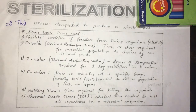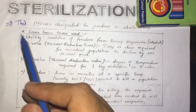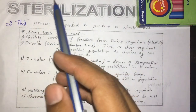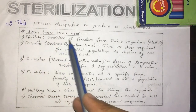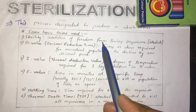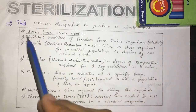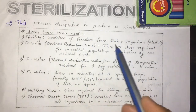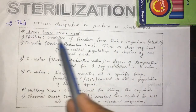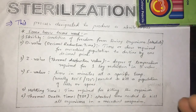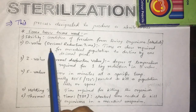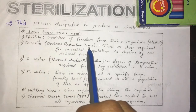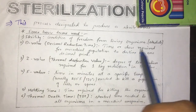There are some basic terms used in sterilization. The first is sterility — the condition of freedom from living organisms is known as sterility. If we kill all organisms, then that is sterility. The second term is D value, or decimal reduction time — the time or dose required for a microorganism population to decline by one decimal point.